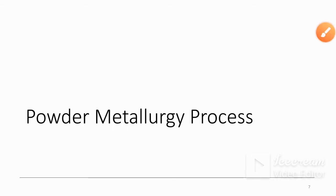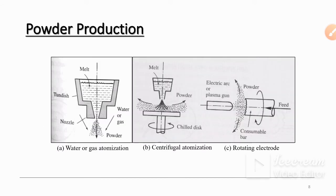Good morning. The next topic is powder metallurgy process. The first step is powder production. There are three major methods to produce powder from metal: first is water or gas atomization, second is centrifugal atomization, and third is rotating electrode.